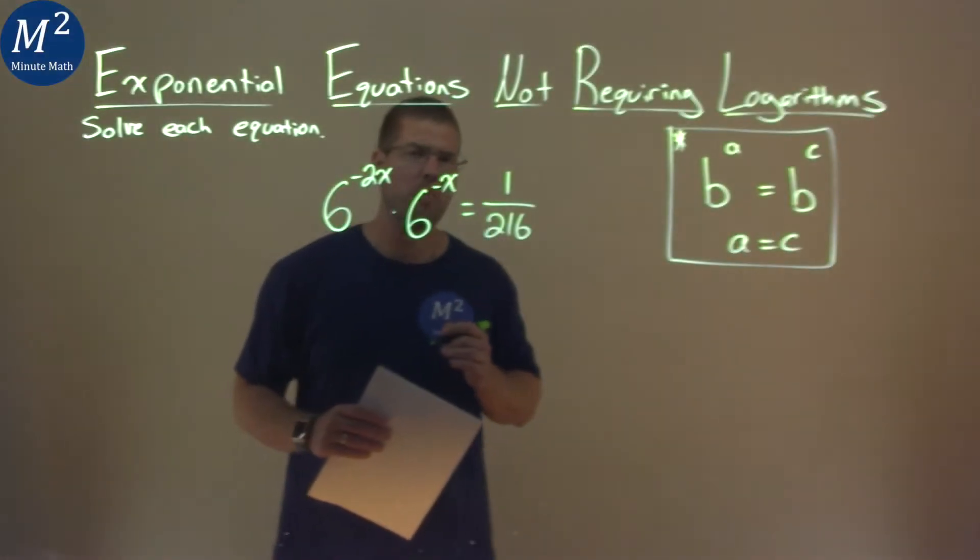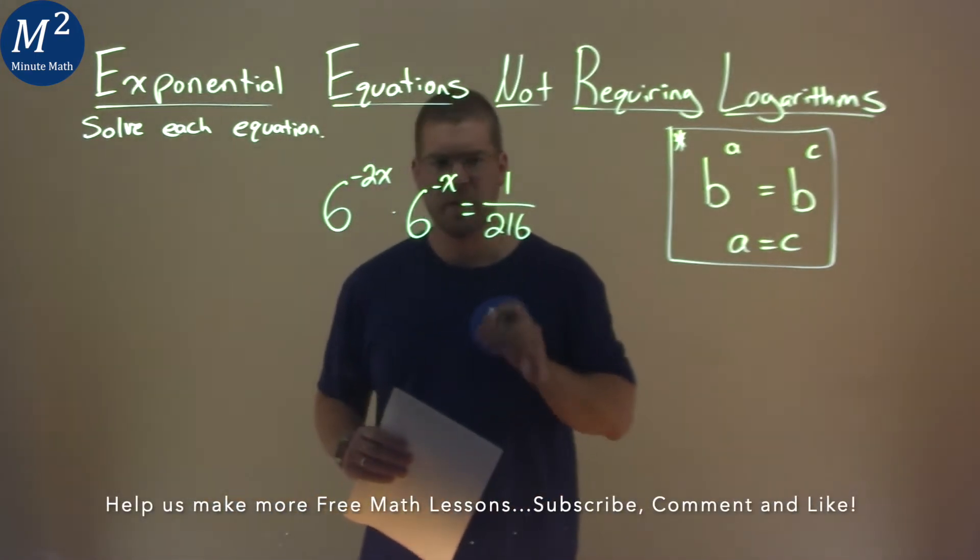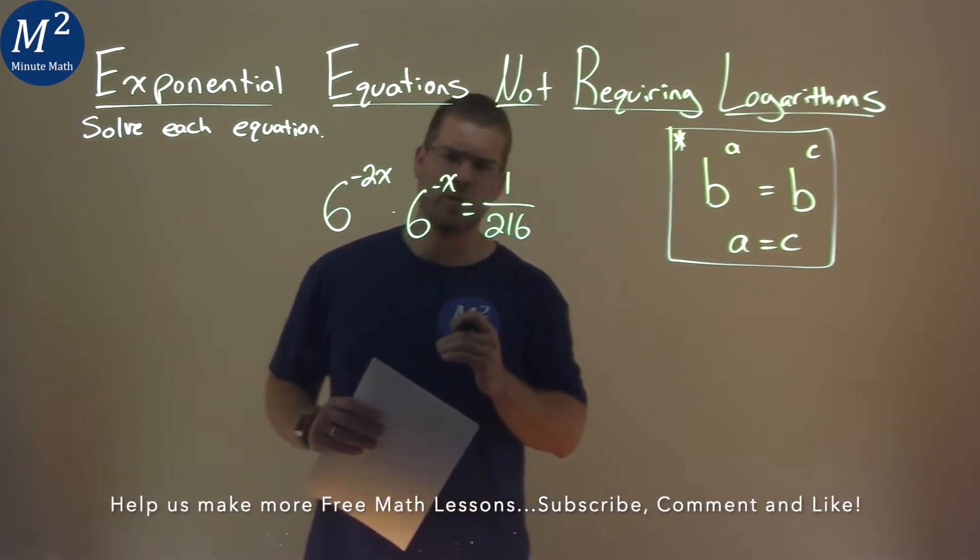We're given this problem right here: 6 to the negative 2x power times 6 to the negative x power, and that's equal to 1 over 216, and we have to solve this.